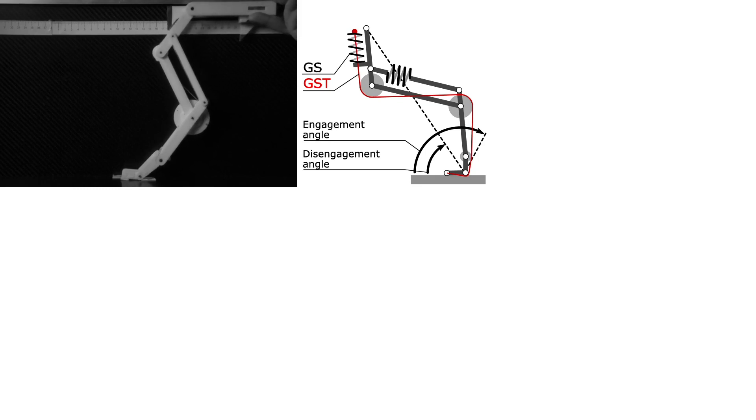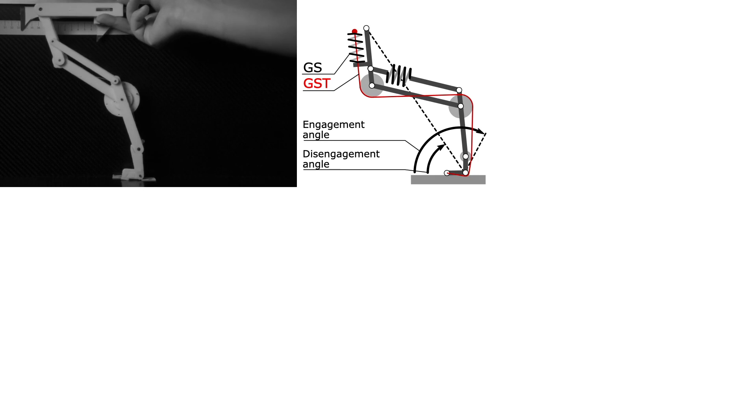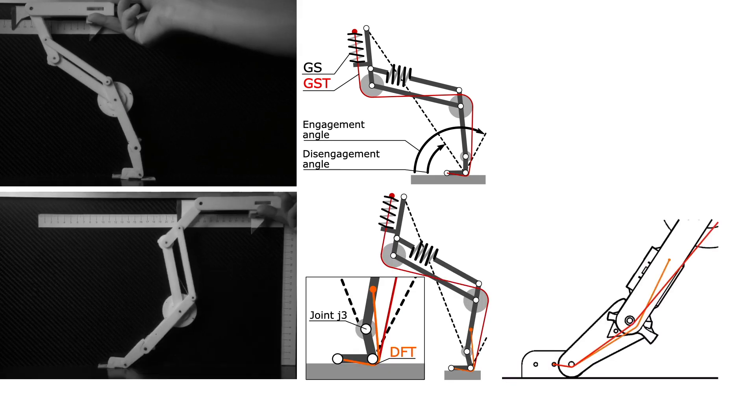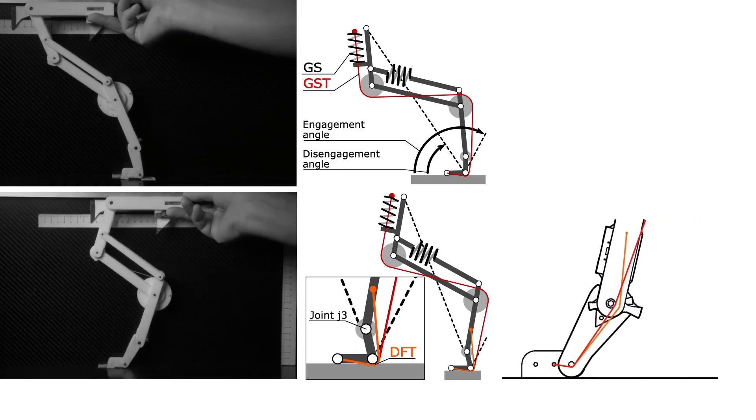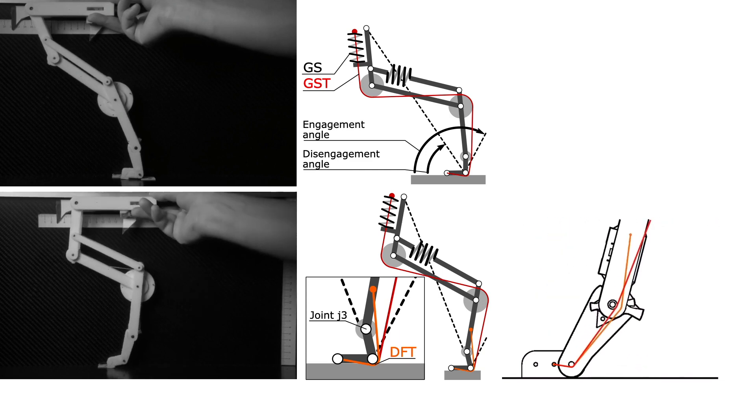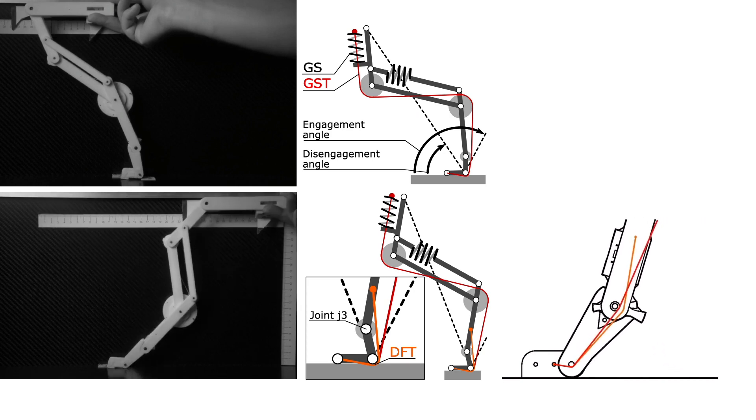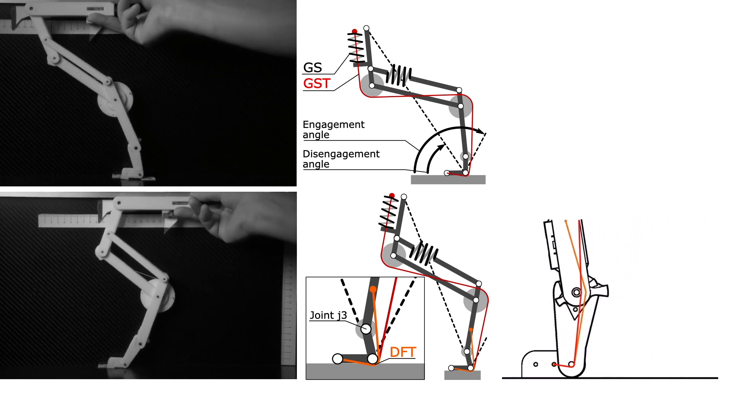In this configuration, the global spring will disengage when the leg is fully extended at end of stance. An additionally mounted disengagement flexor tendon is coupled to the movement of joint J4 in stance. This flexes joint J3, which disengages the global leg spring earlier in stance phase.